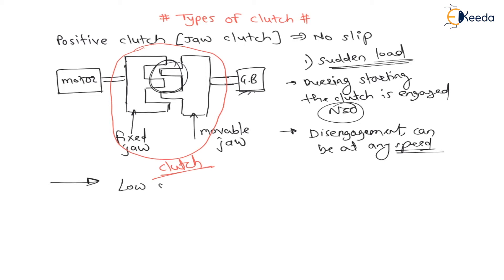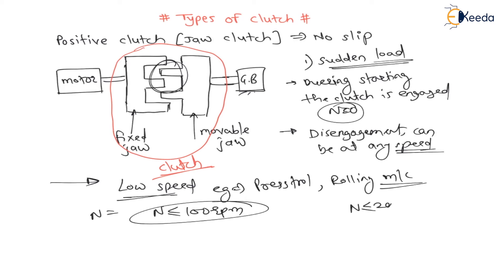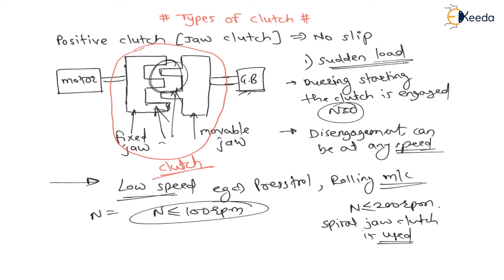Such type of clutches are used for low speed applications only. For example, in a press tool and in a rolling machine, positive clutches are used. Whenever speed is less than or equal to 100 rpm, such clutches are used. If speed is less than or equal to 200 rpm, then a spiral jaw clutch is used. If these straight jaws are made spiral, the clutch can be used up to a speed of 200 rpm.